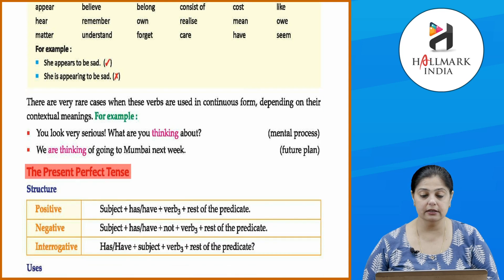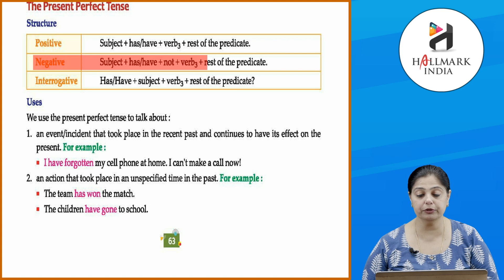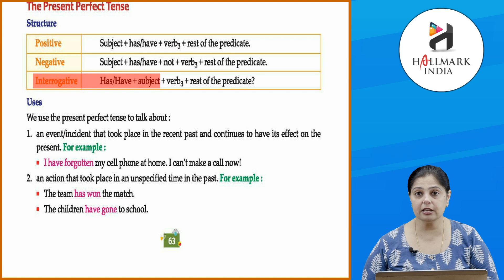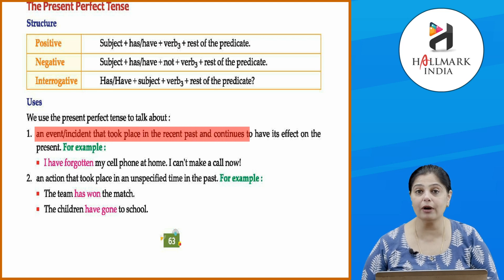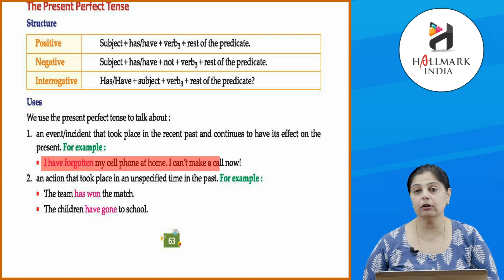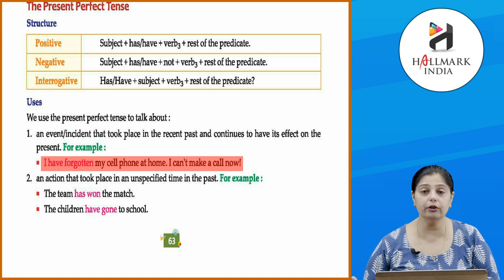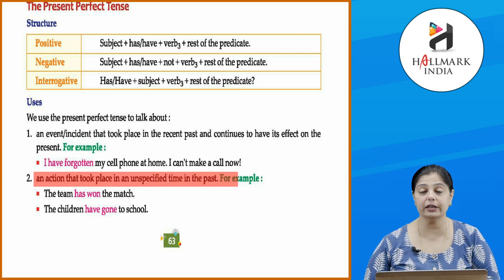Now the present perfect tense. Positive: subject plus has/have plus verb 3 plus rest of the predicate. Negative: subject plus has/have plus not plus verb 3 plus rest of the predicate. Interrogative: has/have plus subject plus verb 3 plus rest of the predicate. We use the present perfect tense to talk about an event that took place in the recent past and continues to have its effect on the present. For example: 'I have forgotten my cell phone at home — I can't make a call now.'